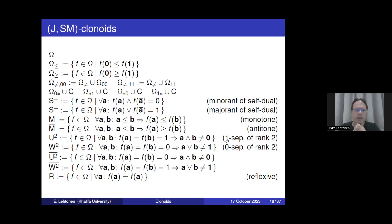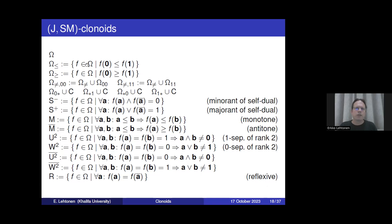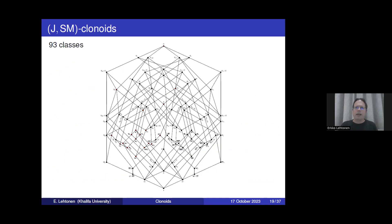We also have the set of all minorants of self-dual functions, majorants of self-dual functions, monotone and anti-tone functions. Then we have the clones U2 and W2 — the clones of 1-separating functions of rank two and 0-separating functions of rank two — and the classes of all negations of such functions, plus R, the set of all reflexive functions. These classes can be shown to be J_A-SM clonoids, and by taking all possible intersections we get a nice lattice of 93 clonoids.